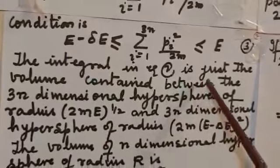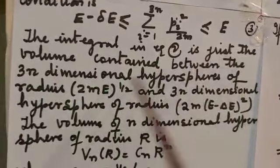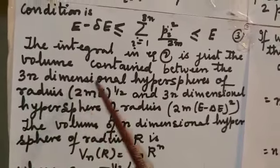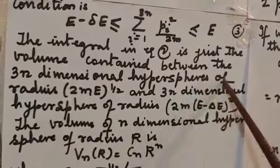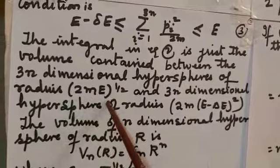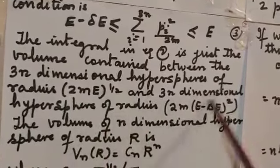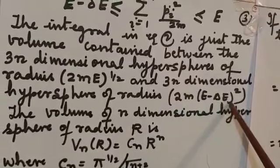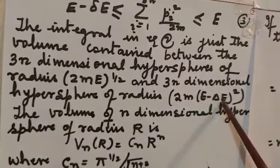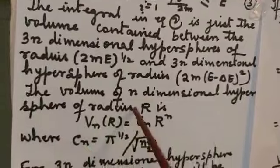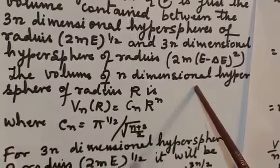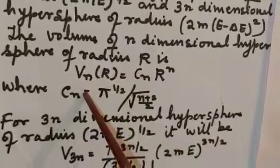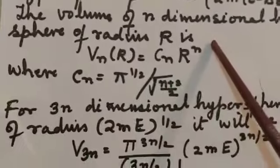The integral in equation 2 is just the volume contained between a 3N-dimensional hypersphere of radius (2mE)^(1/2) and another 3N-dimensional hypersphere of radius (2m(E minus delta E))^(1/2), i.e., within this small energy range. The volume of an N-dimensional hypersphere of radius r is: V_N(r) = C_N * r^N.